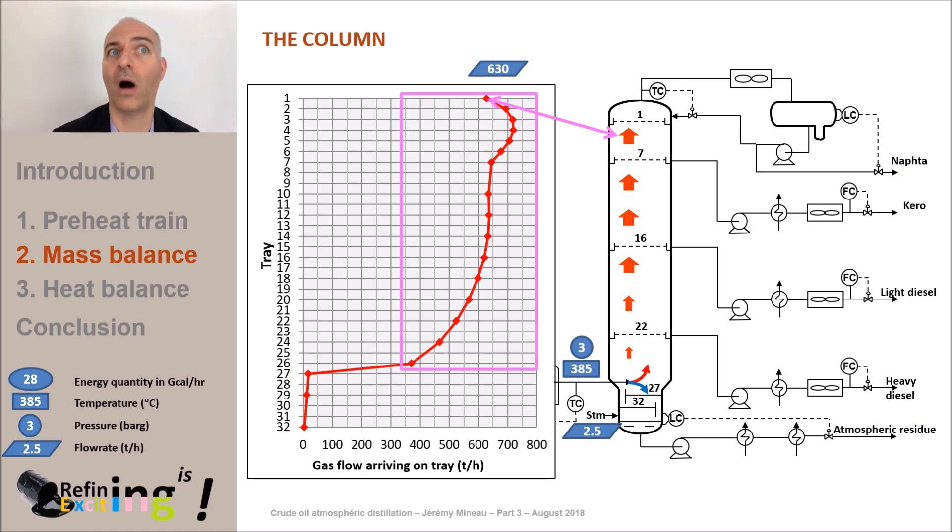The gas leaving tray 1 has a flow rate of about 450 tons per hour. This vapor will be fully condensed in the overhead condenser, which is represented here by an air condenser. As soon as the temperature drops in the air condenser, we will condense the hydrocarbons but also the stripping steam that was injected at the bottom of the column.